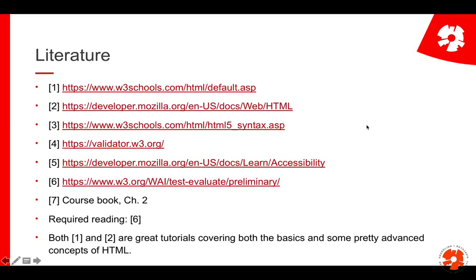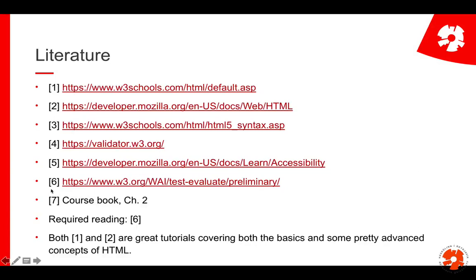As for literature, there is a lot of stuff. The first two references are really good for looking up different tags and examples for different things you might want to do with HTML — great tutorials covering everything from basic to advanced topics. The third one is specifically on HTML5. The fourth is the W3C validator, which we'll use heavily, especially in the assignments. The fifth and sixth references are on accessibility. The seventh is the course book — chapter two is all about HTML. Required reading for the exam is only number six, which covers what to look at when examining accessibility.